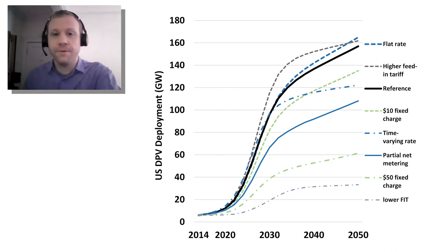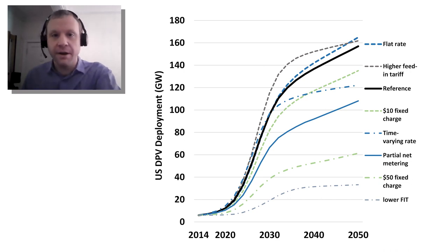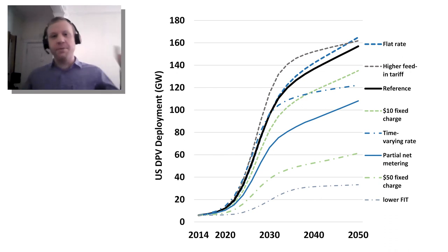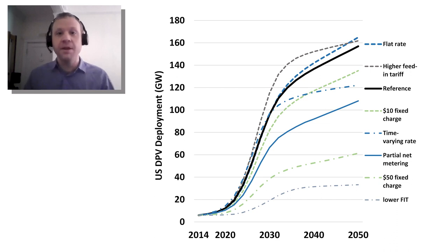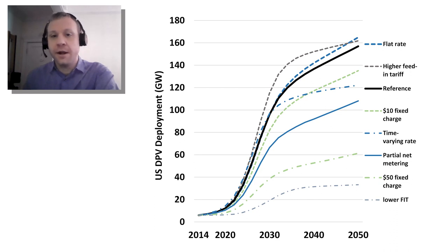The bigger message is that rate design matters enormously. Looking at the best case for the PV customer — the flat rate at the top of the graph — that results in something like five times as much PV as the worst case, which is the lower feed-in tariff. Those are extreme boundary cases where everyone in the country has one rate design that's either really good or really poor for PV. What will actually happen is a continuation of the status quo: a mosaic of different rate designs.